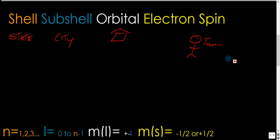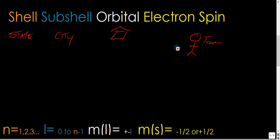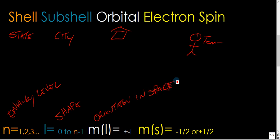So N refers to the energy level. L refers to the shape, and M subscript L refers to the orientation in space of the shape.